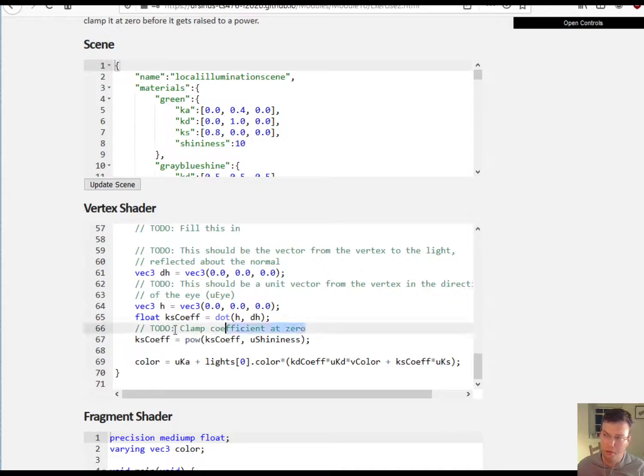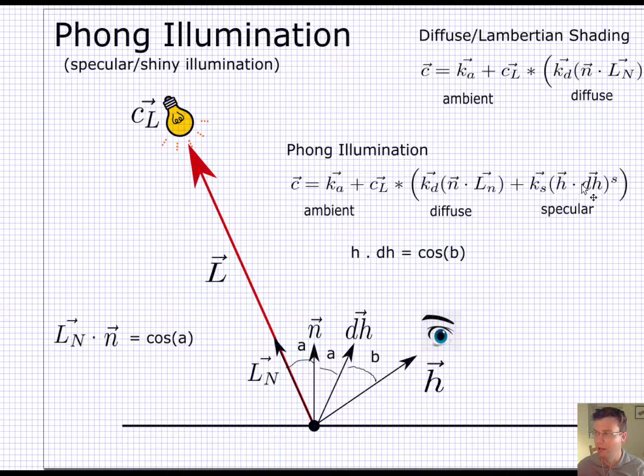And you have to do the same thing also where you clamp it at zero. So if this dot product ends up being less than zero, you don't want to keep it negative - you want to clamp it at zero before you raise it to a power. So that's what you got to do to get the shininess going, so see if you can give that a shot. And that will be it for this module. We'll do something in class with this that will take you a little further, but this is the basics of Phong illumination.